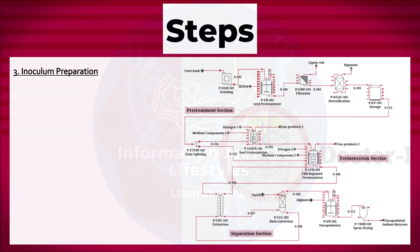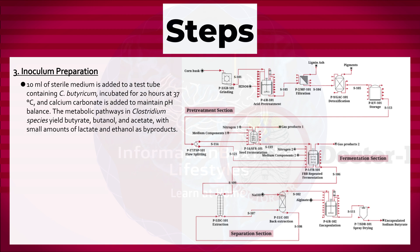Third, inoculum preparation: 10 milliliters of sterile medium is added to a test tube containing Clostridium butyricum, incubated for 20 hours at 37 degrees Celsius, and calcium carbonate is added to maintain pH balance. The metabolic pathways in Clostridium species yield butyrate, butanol, and acetate, with small amounts of lactate and ethanol as byproducts.